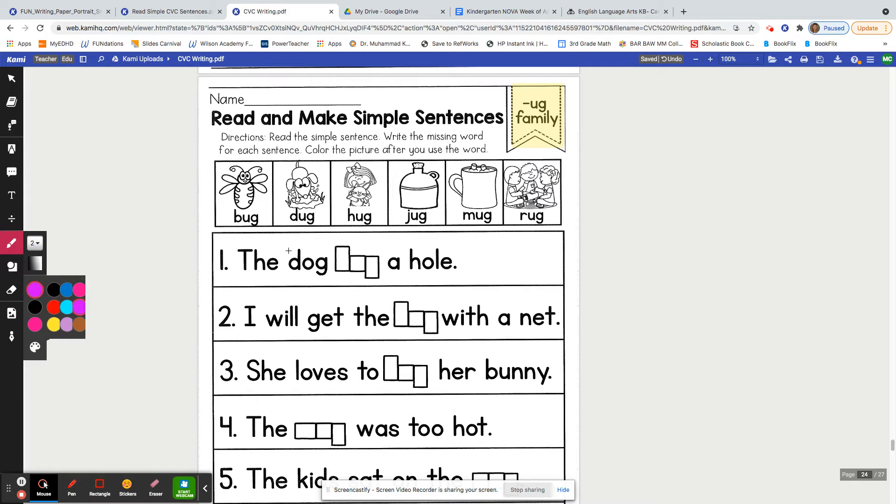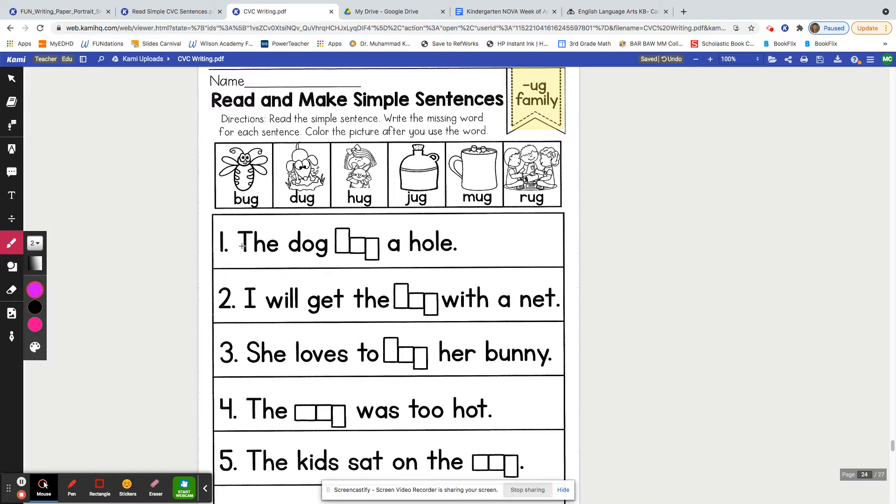All right, for the first sentence, the dog, a hole. Which one would make sense? The dog, right, dug a hole.